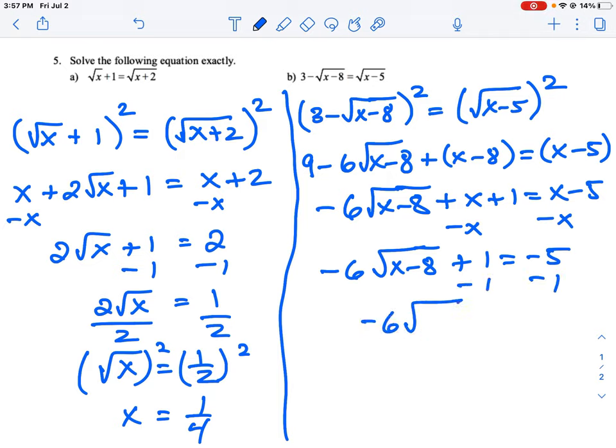So we can see something here, negative 5 minus 1 is negative 6. So now we have a negative 6 in front here and a negative 6 there. So if we divide those, that'll cancel. And that leaves us with a nice value of 1, and then we have root x minus 8.